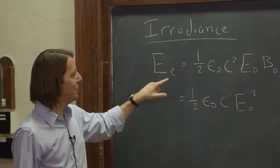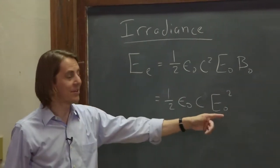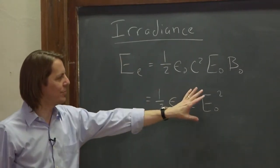So remember, e, little e, is irradiance. E, anything else, is usually electric field. So this is the irradiance in terms of the electric field. You pretty much square the electric field and include constants.